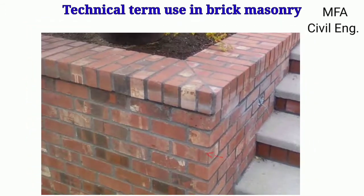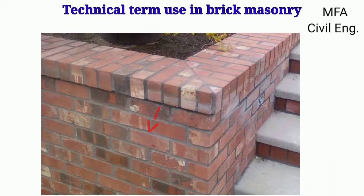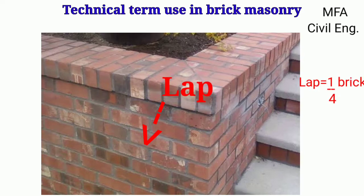The horizontal layer of a brick in a wall is called the course, and the junction of two or more bricks in wall construction is called the joint. The horizontal distance between vertical joints in successive courses is called the lap. If the lap is one-fourth of the length of the brick, the construction of a bond is good.